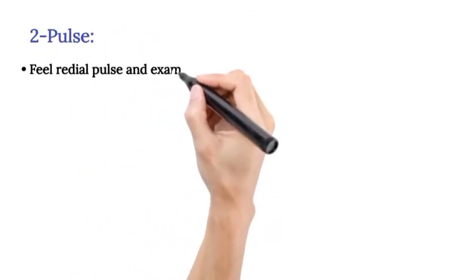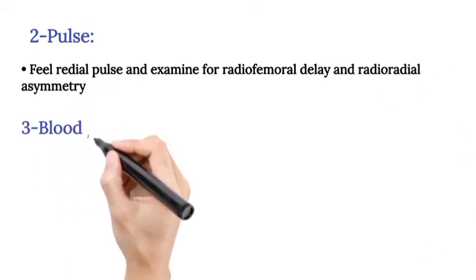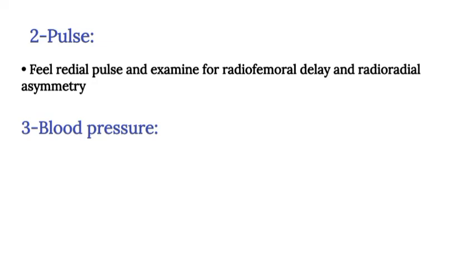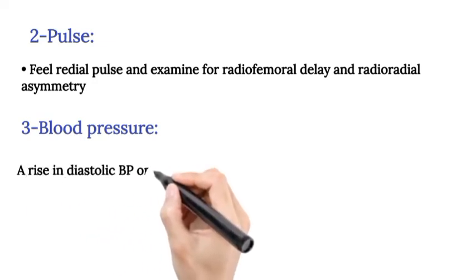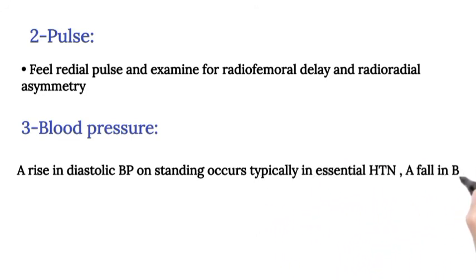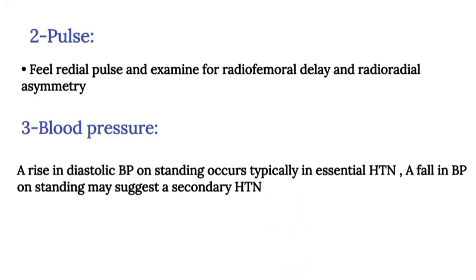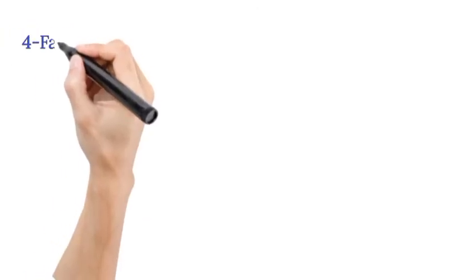Pulse: Feel radial pulse and examine for radiofemoral delay and radioradial asymmetry. Blood pressure: Take BP with patient lying and standing. A rise in diastolic BP on standing occurs typically in essential HTN. A fall in BP on standing may suggest secondary HTN.